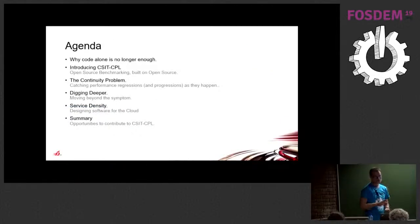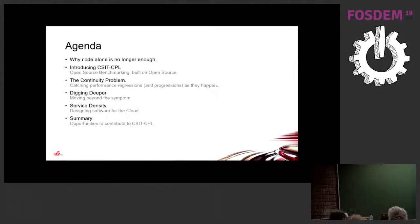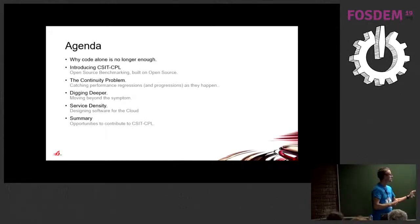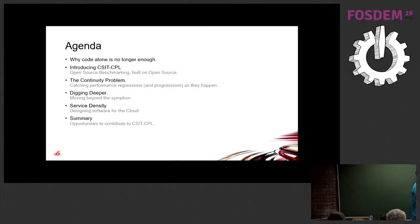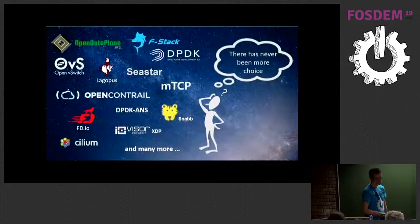So the three key parts of FD.io: one is the data plane, second is integrations, and third is benchmarking. Today I'm going to talk about why code is no longer enough, which is essentially why benchmarking is important. I'll talk a little about what CSIT is, then dig into three interesting problem statements we're trying to solve with CSIT, and finish with a summary.